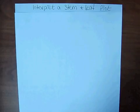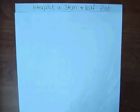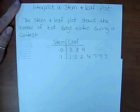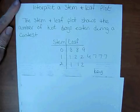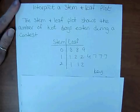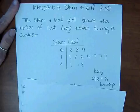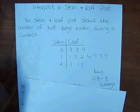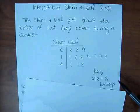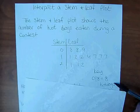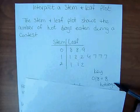Interpreting a stem and leaf plot. Here we have a stem and leaf plot that shows the number of hot dogs eaten during a contest. Our key says that 08 means 8 hot dogs. So now we have to answer some questions.